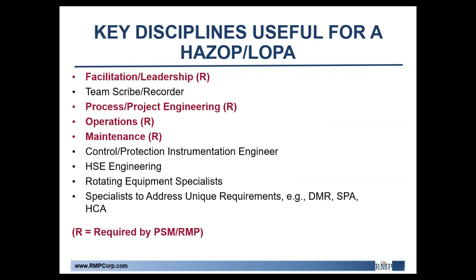Moving on to some key disciplines useful for a HAZOP study. You need a facilitator and a scribe. Important members are also process and project engineers, operations, maintenance, control and protection instrumentation engineers, HSE engineers, rotating equipment specialists for the given system, and any specialists in unique requirements. These personnel need to be knowledgeable in the design of their portion of the system and know the dynamics of system response. They also have to critically consider the response of their portions of the design to upset conditions.